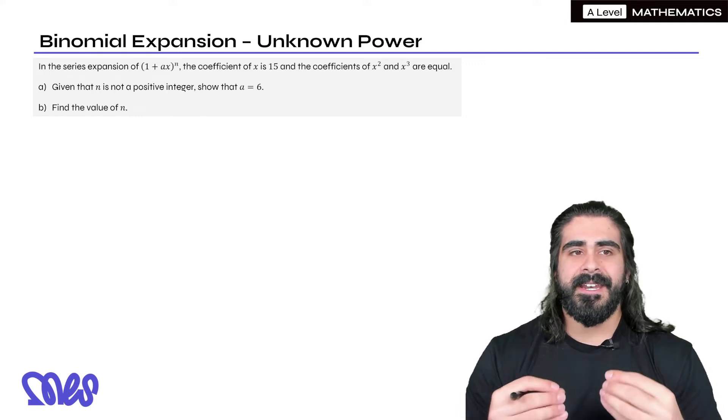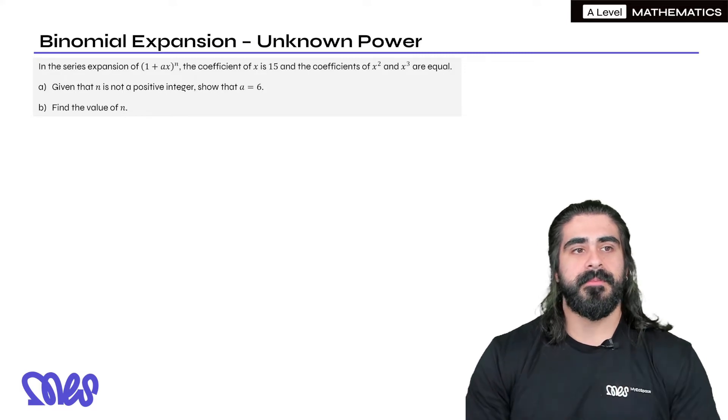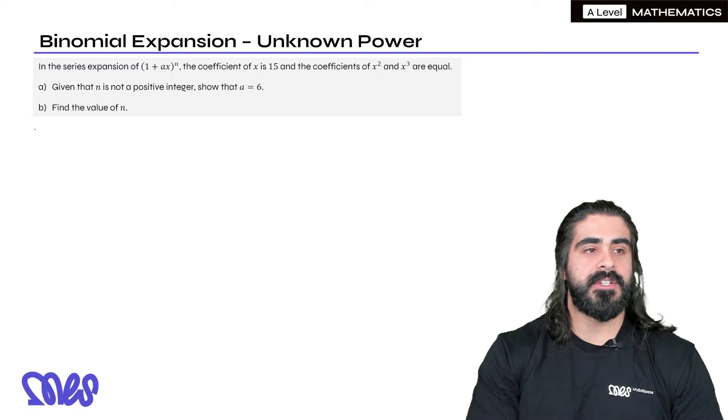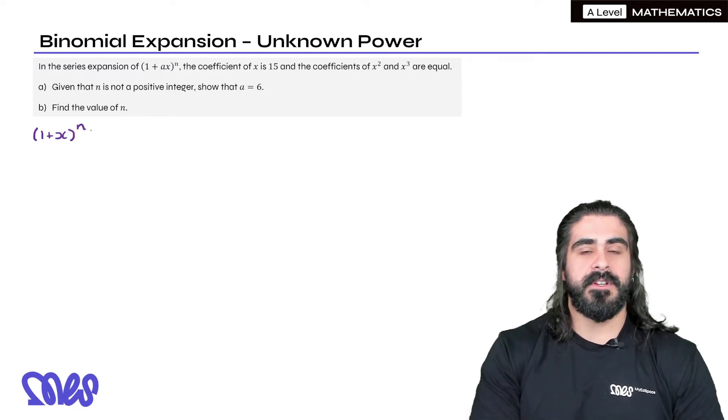Now when n is unknown, it could be fractions, it could be negative and these are possible, but to utilize that we need to use the general binomial expansion, the infinite expansion.